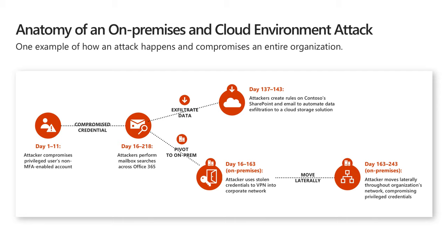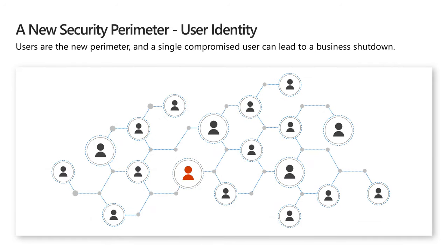Unfortunately, the path doesn't take attackers that long to traverse, and security operations teams need to be able to understand the full scope of these attacks, from on-premises to the cloud — and that's where Microsoft Azure Advanced Threat Protection can help. It only takes one user to potentially compromise an entire organization — that patient zero. Because attackers can gain access to the entire organization through compromising a single user, identity has really become the new security perimeter. For the hybrid enterprise, securing user identity across an organization can be daunting and a challenge for most security professionals.